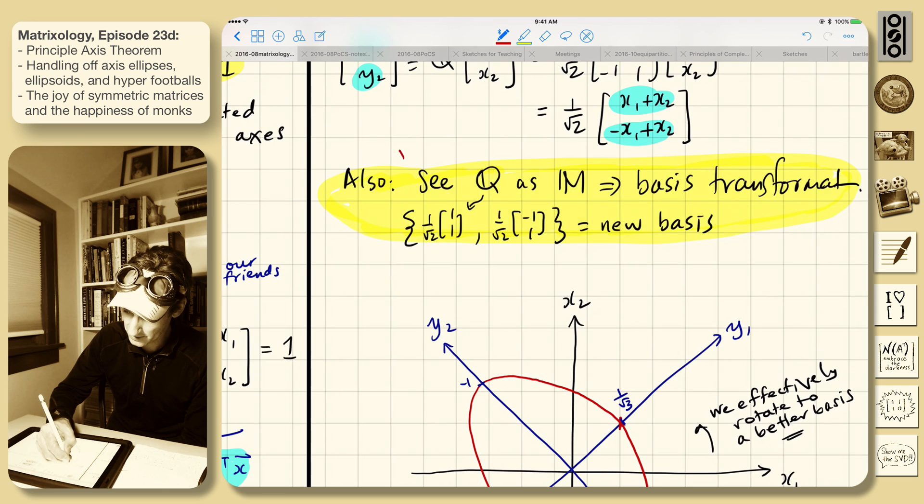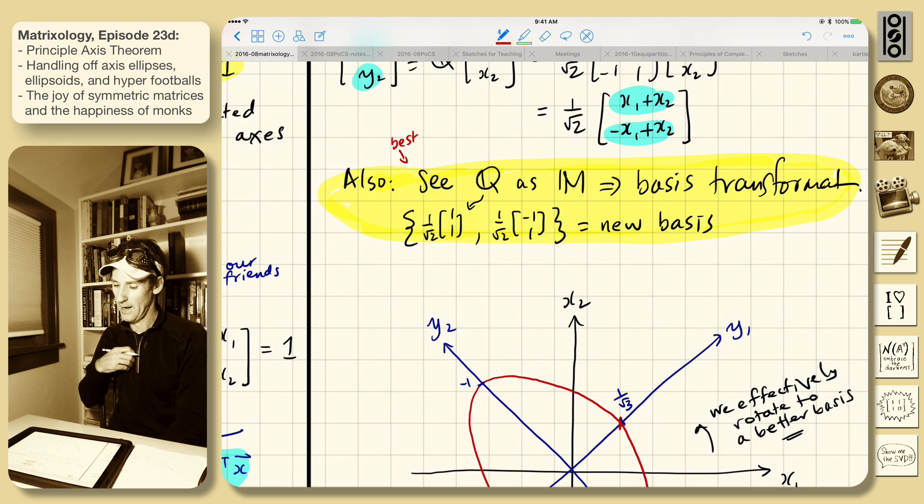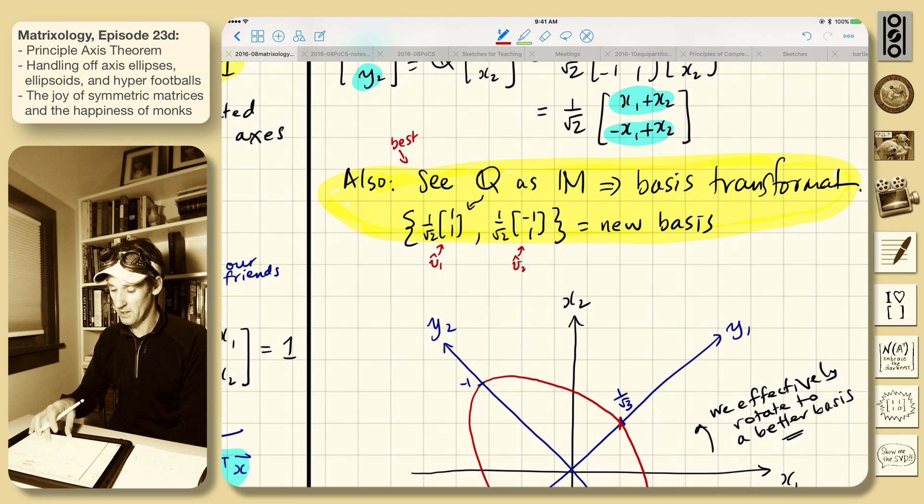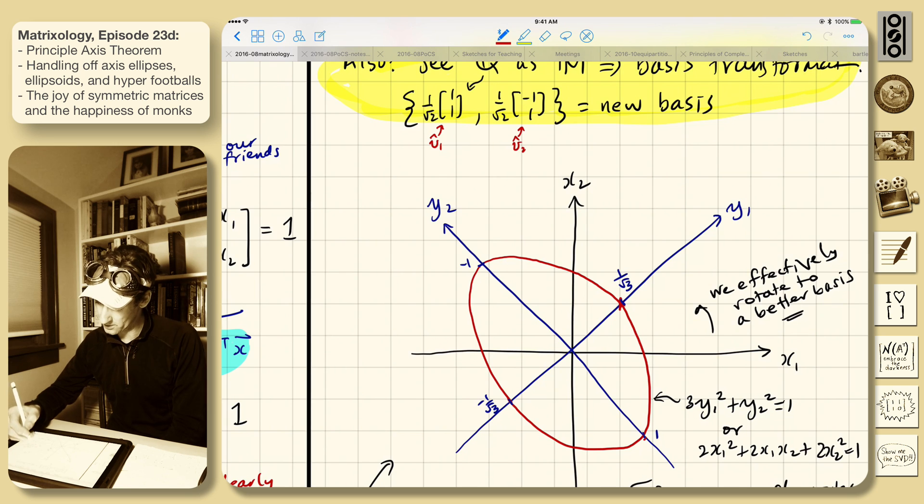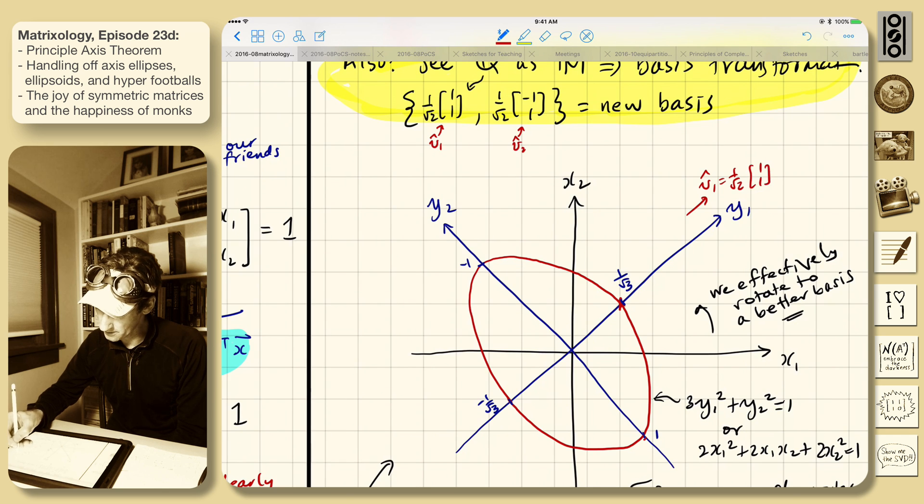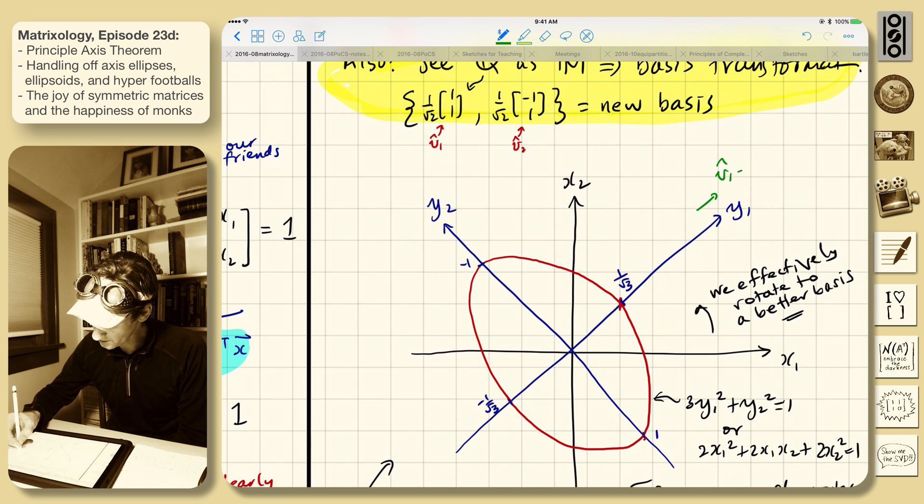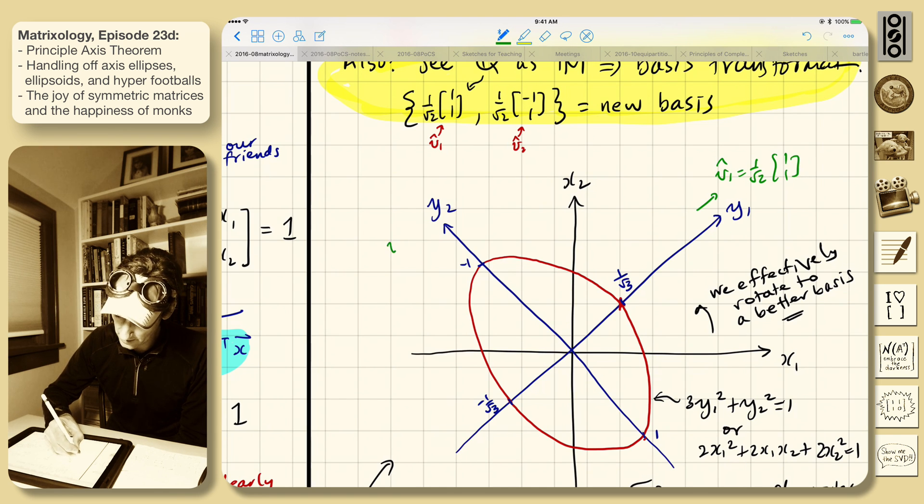Right? So this is best. And these are our new basis vectors. Right? So this is v1 and this is v2 expressed in the standard basis. So let's draw them. Right. So this is v1 is in this direction. v1 equals 1 over root 2, 1, 1. And then v2 is in this direction. You know what? That should be green. Go away. There's enough red on this one. So this is v1. New basis. 1, 1. And this is v2 equals 1 over root 2 minus 1, 1.